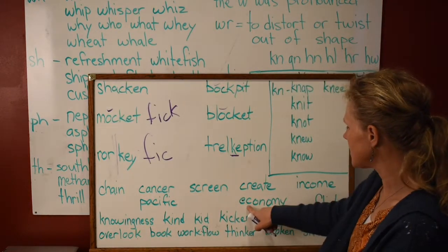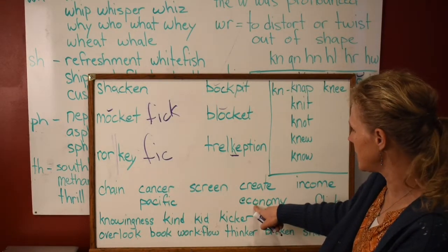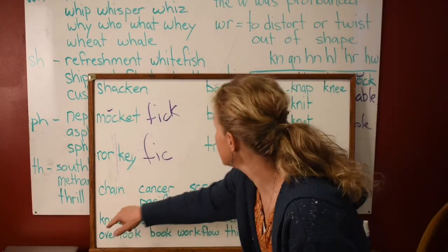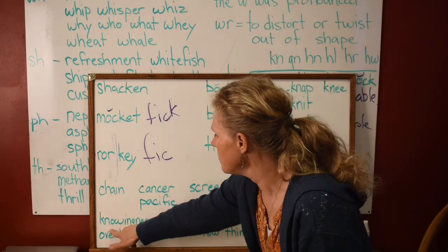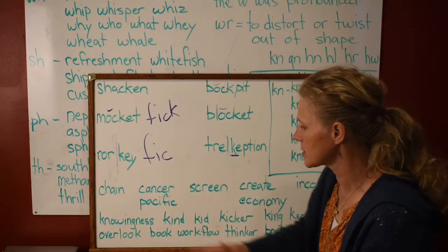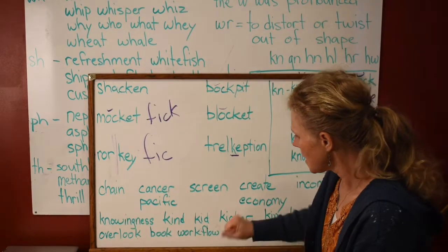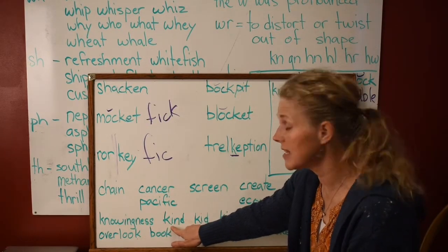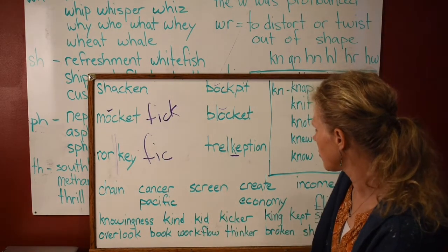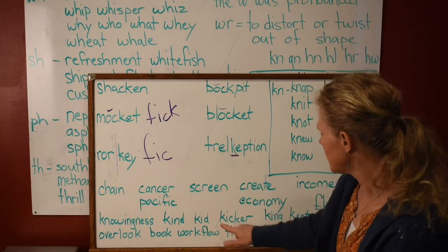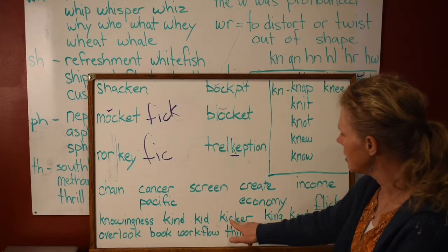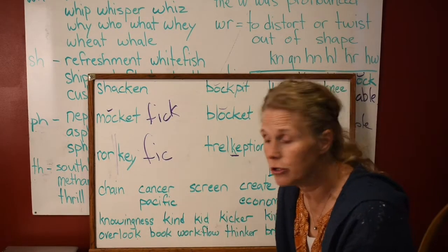'Economy' is spelled with C because O is not E, I, or Y. Now look at this — this K is a digraph. 'A-knowingness' — this is a base word with two suffixes added on; it looks big but it's quite small. 'Kind' is spelled with K because I is an E, I, or Y. Same thing here. 'Kid,' 'kicker,' 'king,' 'kept' — see how they're all followed by E, I's, or Y's. That's when you use K.